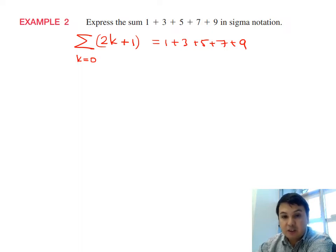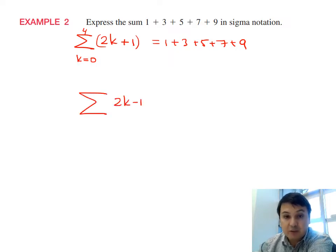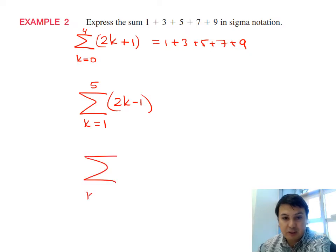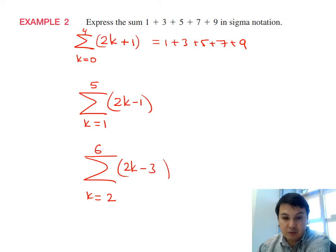When k = 4, 2(4) + 1 = 9. You can also represent odd numbers as 2k - 1, but then you start at k = 1, since 2(1) - 1 = 1, and end at k = 5, since 2(5) - 1 = 9. You can even start from k = 2 and end at k = 6, using 2k - 3, since 2(2) - 3 = 1 and 2(6) - 3 = 9.